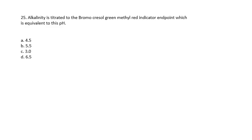Question 25: Alkalinity is titrated to the bromo-cresol-green-methyl-red indicator endpoint, which is equivalent to what pH? 4.5, 5.5, 3.0, or 6.5. When titrating for alkalinity, the pH endpoint is 4.5.